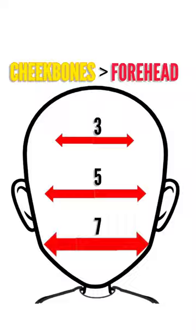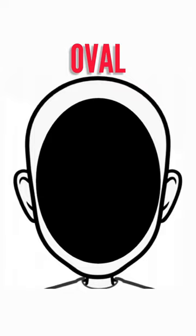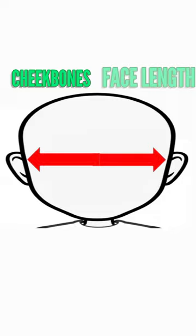Diamond faces: your cheekbones are the widest, followed by your forehead and then your jawline. Oval faces: your forehead is larger than your jawline and your face length is larger than your cheekbones. If your cheekbones and face length are similar but are larger than your forehead and jawline, which are also similar, you have a round face shape.